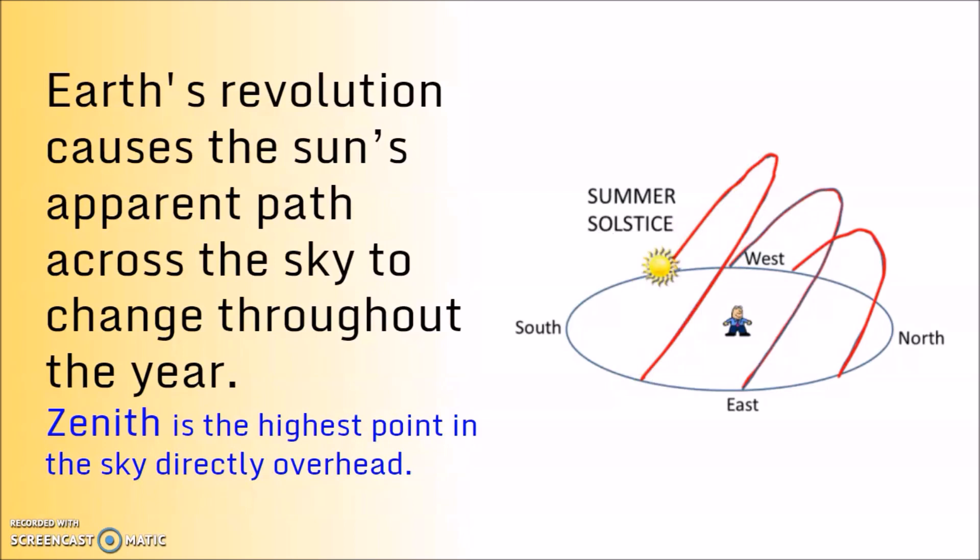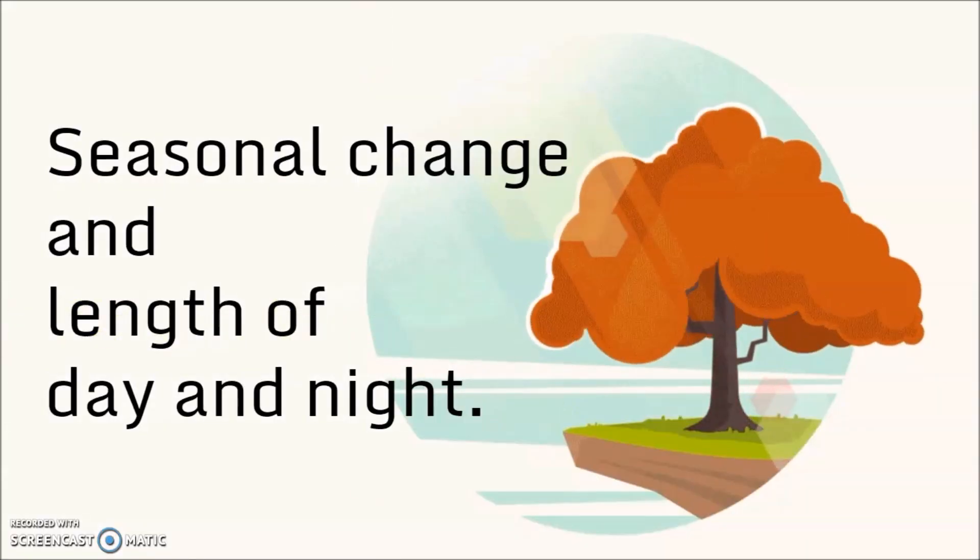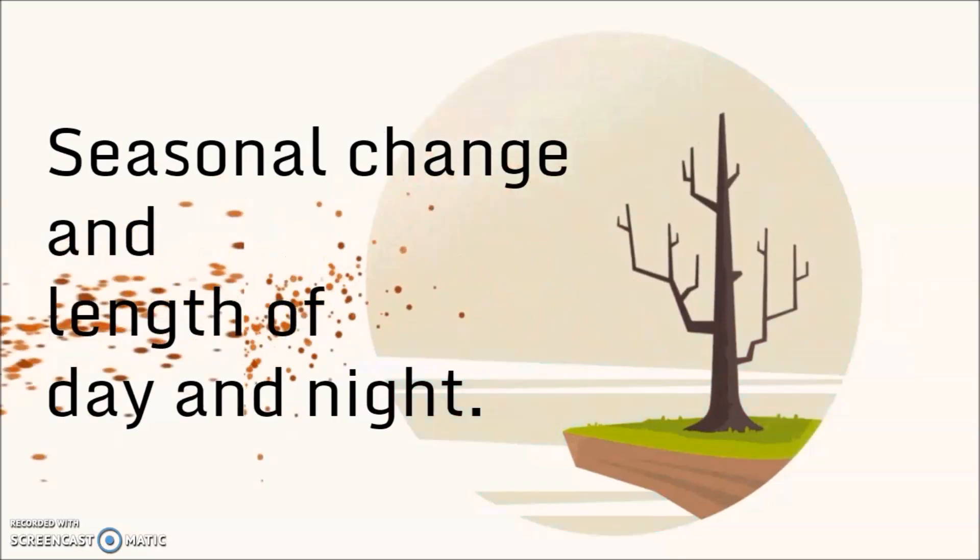Earth's revolution has many effects for us on Earth. One of the causes is that the Sun's path across our sky is going to change throughout the year. The point where the Sun is the highest in the sky is called Zenith. Another effect of the Earth's revolution is the seasonal change, and the change in the length of day and night.